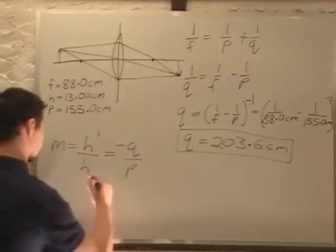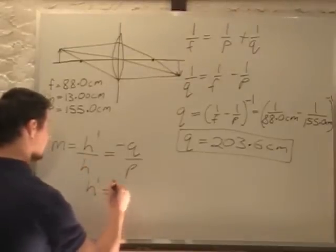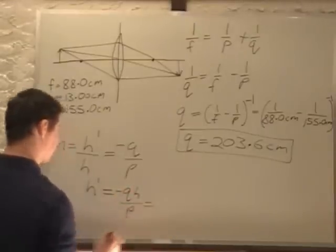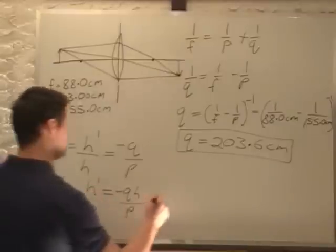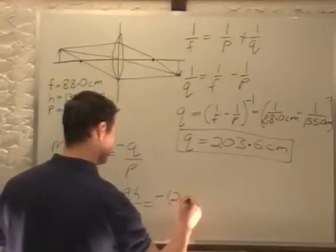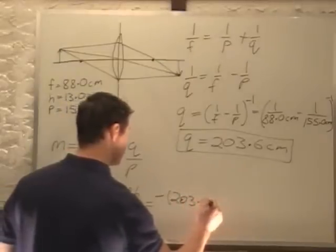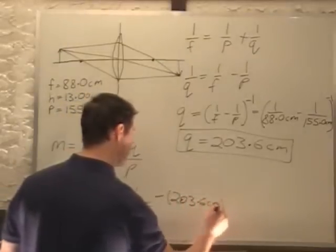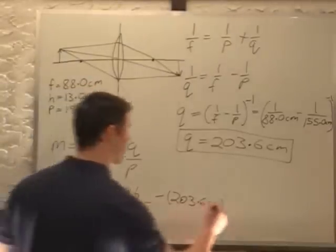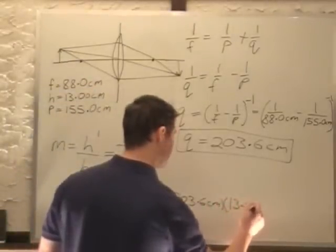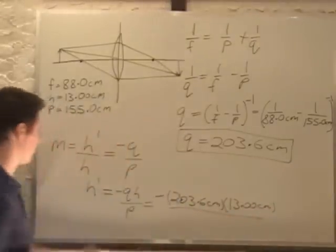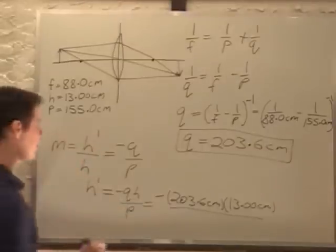So we can solve for H prime. Our final height equals negative Q over P times H. Q is 203.6 cm, times our object height of 13.00 cm, all divided by P of 155 cm.